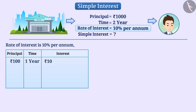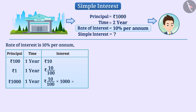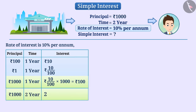In this way, the interest of one year on Rs. 1 will be Rs. 10 by 100. Similarly, the interest for one year on Rs. 1000 will be Rs. 10 by 100 multiplied by 1000, which is equal to Rs. 100. Since the simple interest for one year is Rs. 100, the interest for two years will be 2 multiplied by Rs. 100, which is equal to Rs. 200.